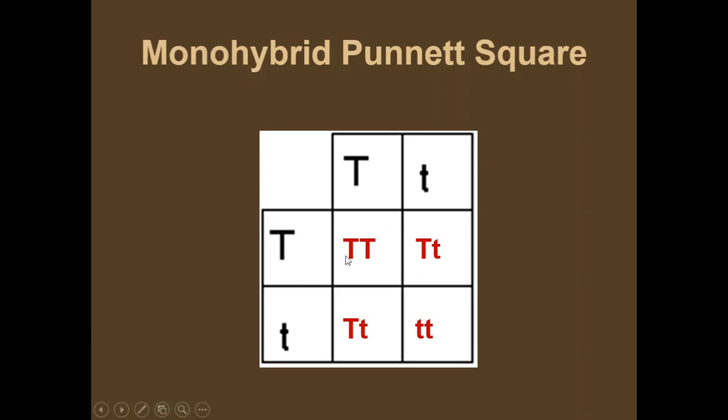So what percentage of these offspring are going to be tall? Well, we look, okay, if these four squares make up 100% of their offspring, what percent will come out with big T, big T? 25% would come out with that. 25% would come out within this box. 25% would come out in this box. And 25% would come out here. So that means what percent total would be big T, big T? If you said 25%, you're right.